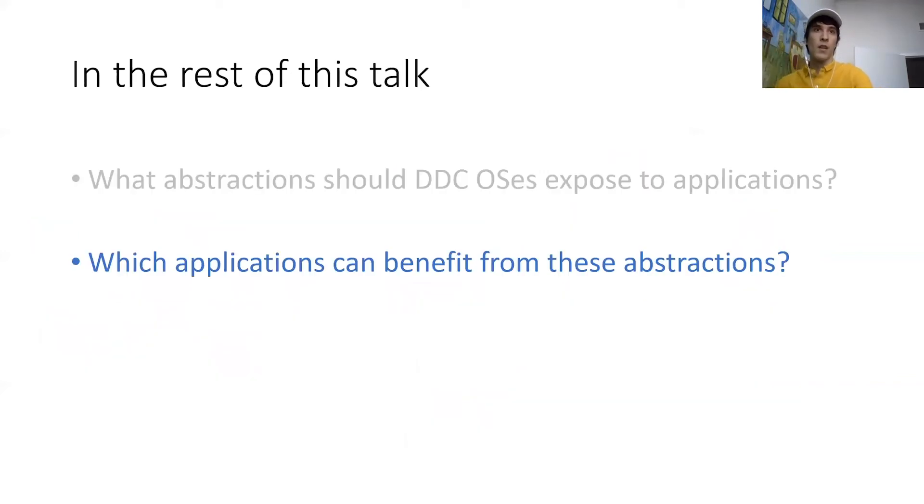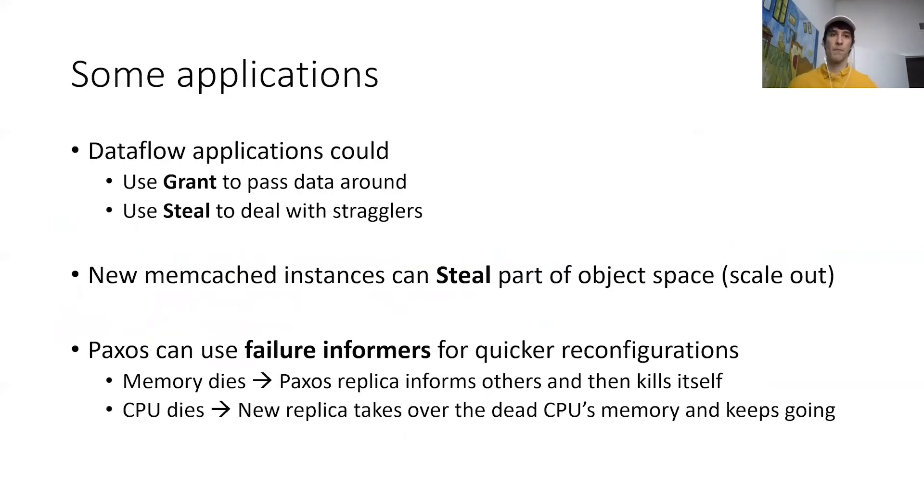Now that we have covered a few different primitives, let me talk about some applications that can actually use these primitives to improve their performance. The first set of applications that we're considering are dataflow or graph processing systems like MapReduce or Naiad. These applications can actually use grants to pass data around from one worker to the next without actually having to send the data over the network. So it's basically like passing data using references instead of by value, if you want to think of it that way.